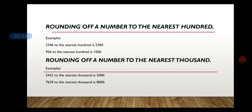The same procedure follows when rounding off a number to the nearest thousand. 5,432 rounded off to the nearest thousand gives 5,000, as 4 is in the hundreds place and all digits beside it become 0. 7,639 rounded off to the nearest thousand gives 8,000, because 6 in the hundreds place is greater than 5, so 1 is added to 7, giving 8,000. Thank you.